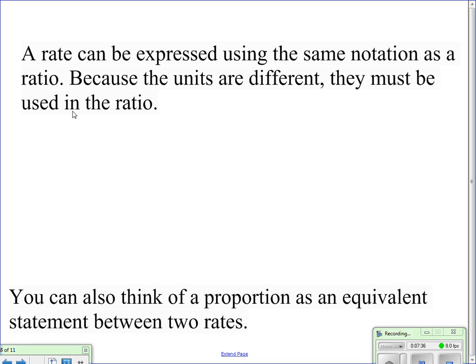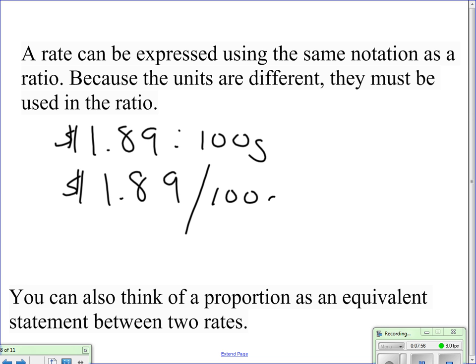A rate can be expressed using the same notation as a ratio, but we need to include the units because they are different. So, for example, if we're going to look at the ratio $1.89 for every 100 grams, maybe we're working at a grocery store. Remember, fractionally, we can write this out as follows. $1.89 per 100 grams. Remember, we've seen these rates before in grocery stores. One way to also think about a proportion is as equivalent statement between two rates. So, let's look at a couple examples.